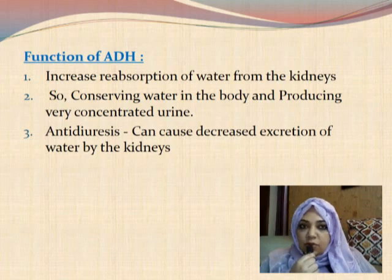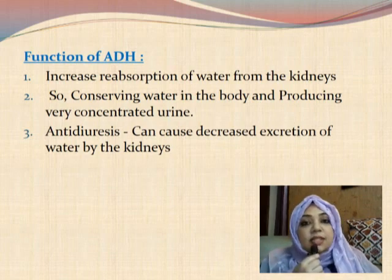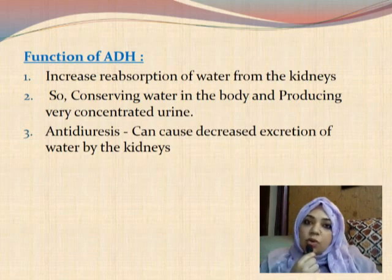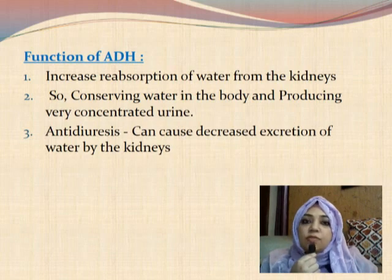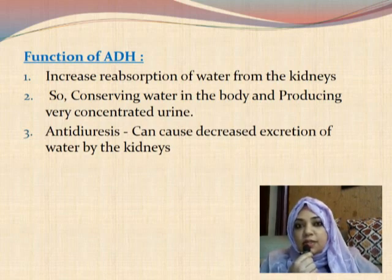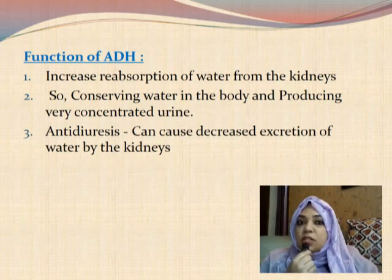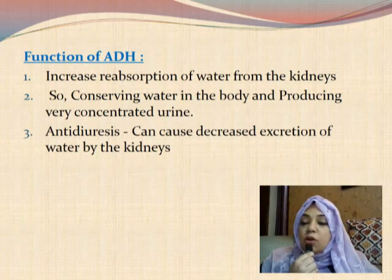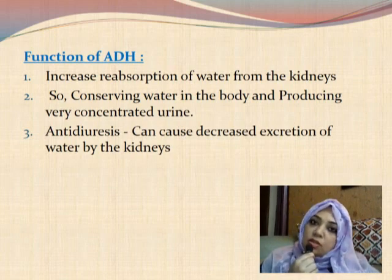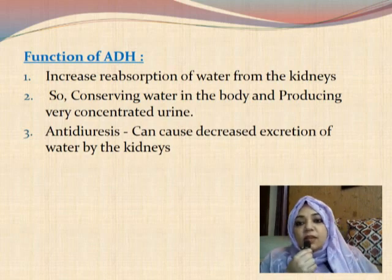What is the function of ADH — anti-diuretic hormone? First, let us know what diuresis means. Diuresis means excretion of a large volume of urine, more than three liters per day. Normal urine output on average in 24 hours is 600 ml to 2.5 liters. When a person is excreting more than three liters, this condition is known as diuresis. The name anti-diuretic hormone tells us it prevents diuresis, so it conserves water in the body.